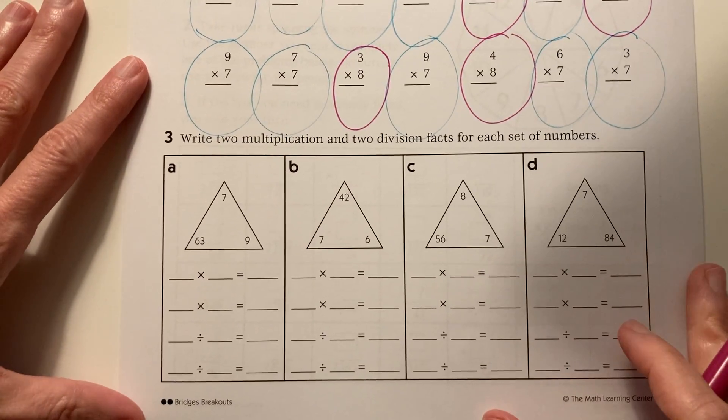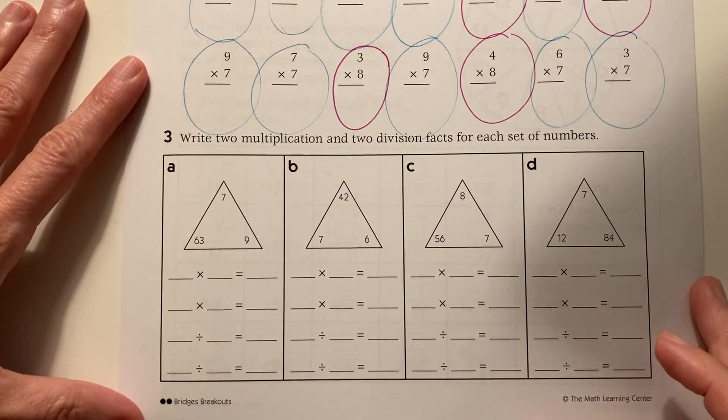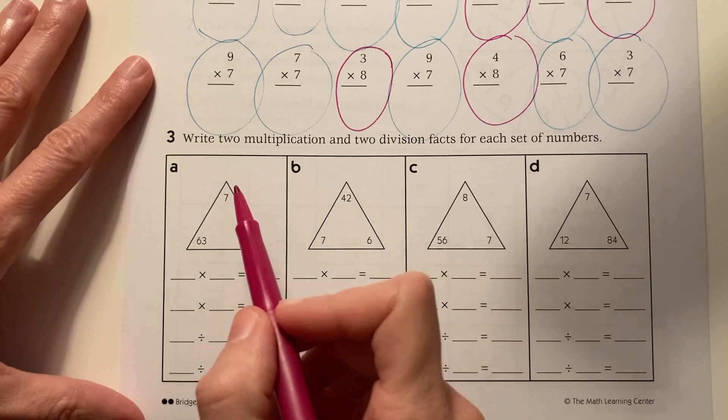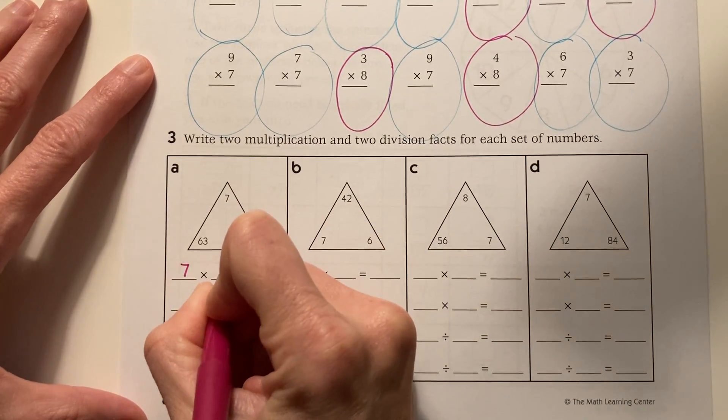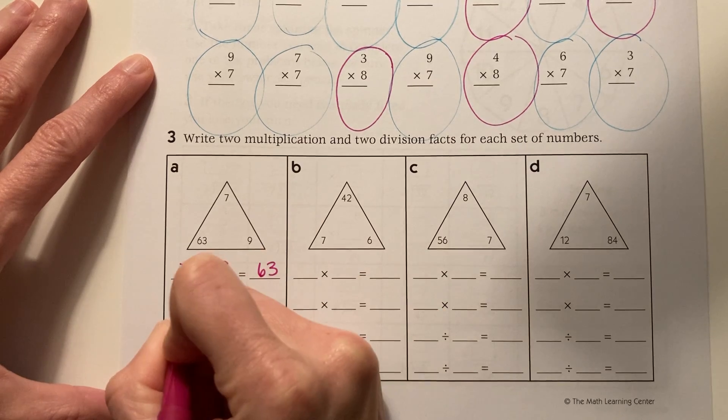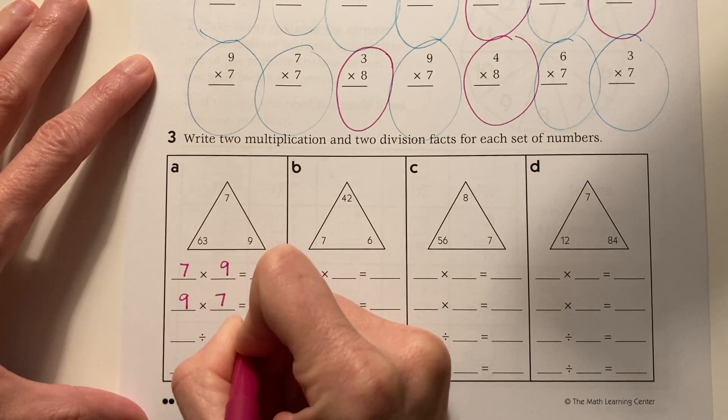And then finally, write two multiplication and two division facts for each set of numbers. So I'm going to use my two factors and my product. Factor, factor, product. Switch them around. Factor, factor, product.